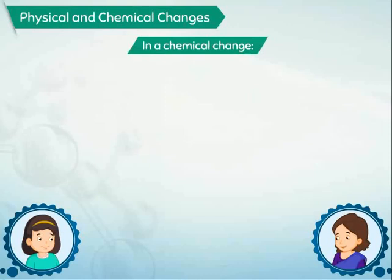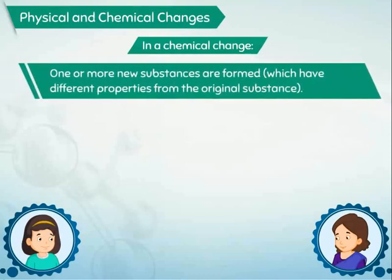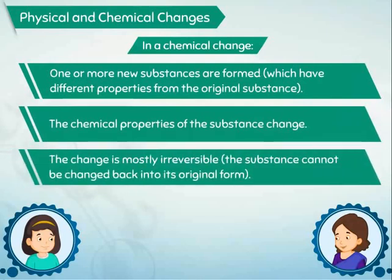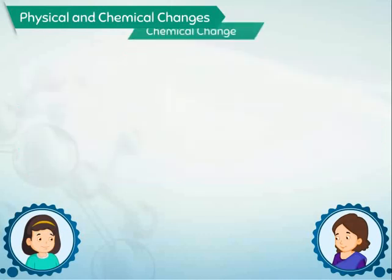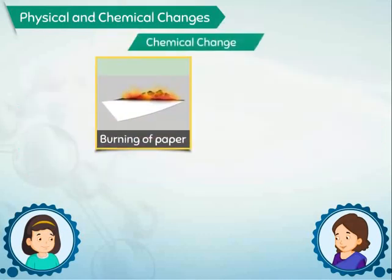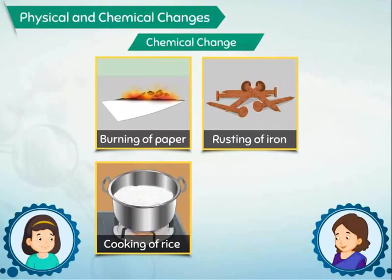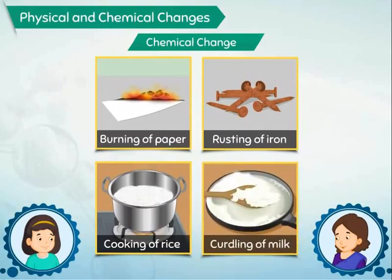So, in a chemical change, one or more new substances are formed. Chemical properties of the substance change. The change is mostly irreversible. Burning of paper, rusting of iron, cooking of rice, and curdling of milk are all chemical changes.